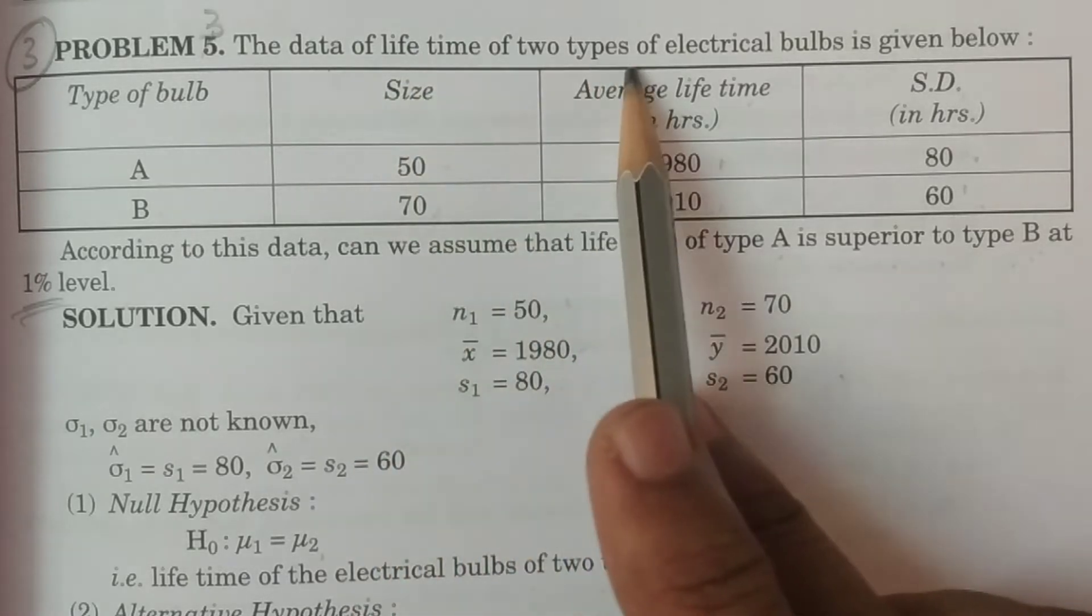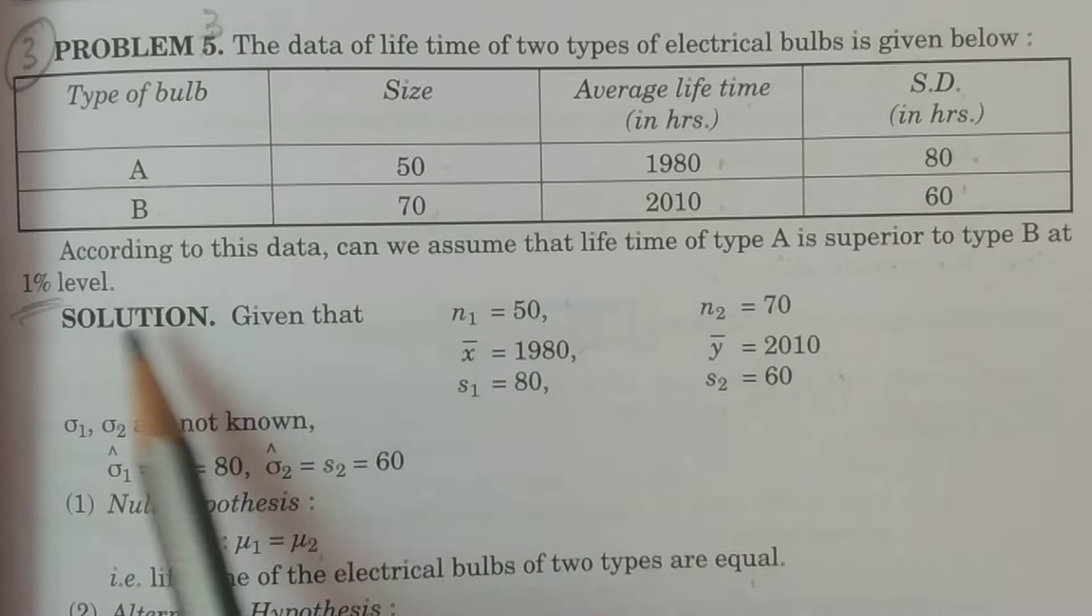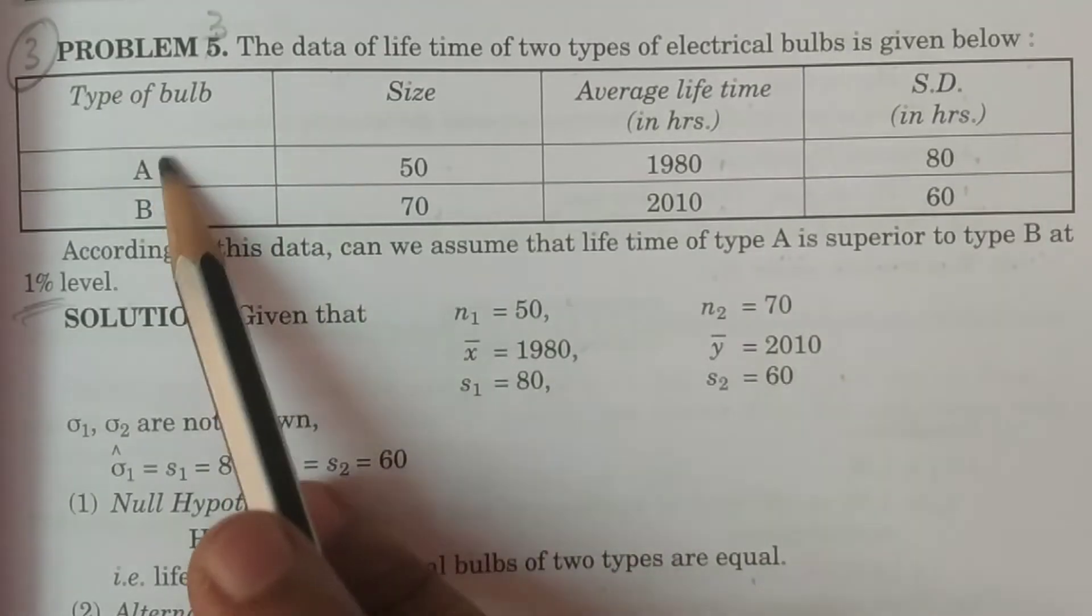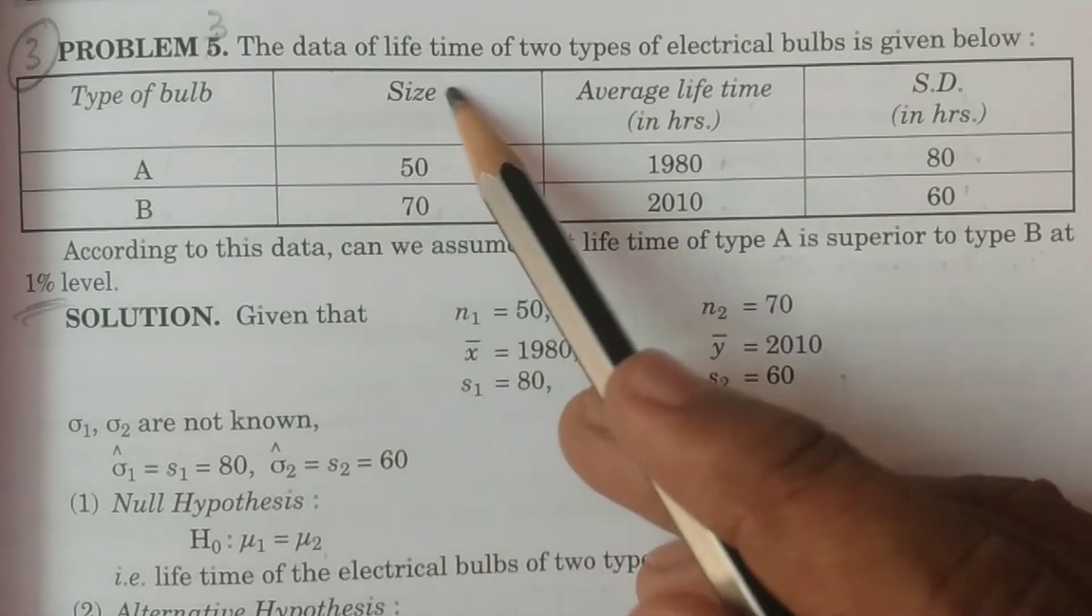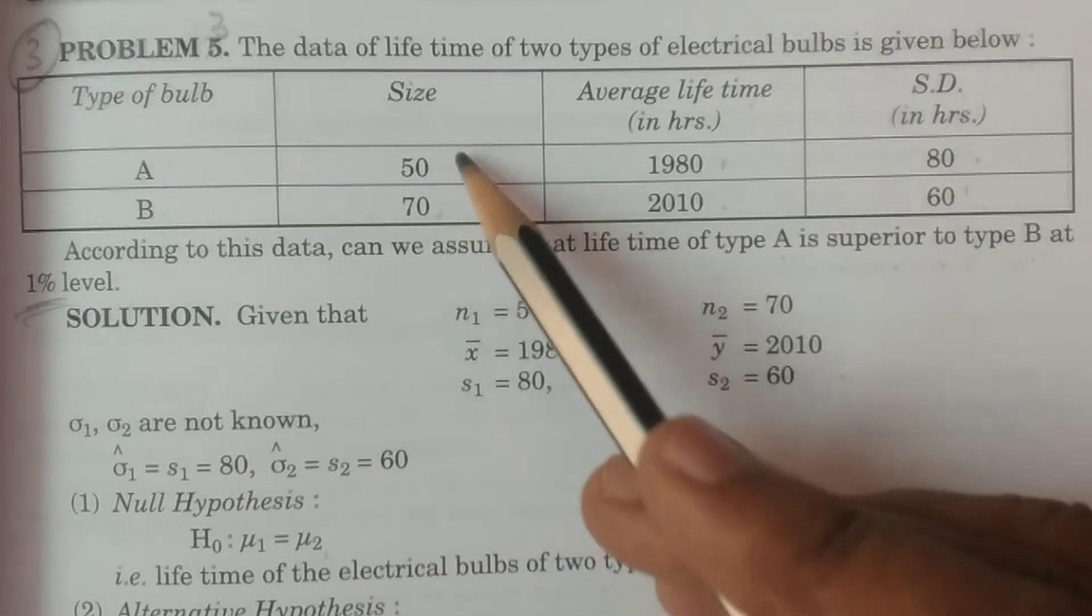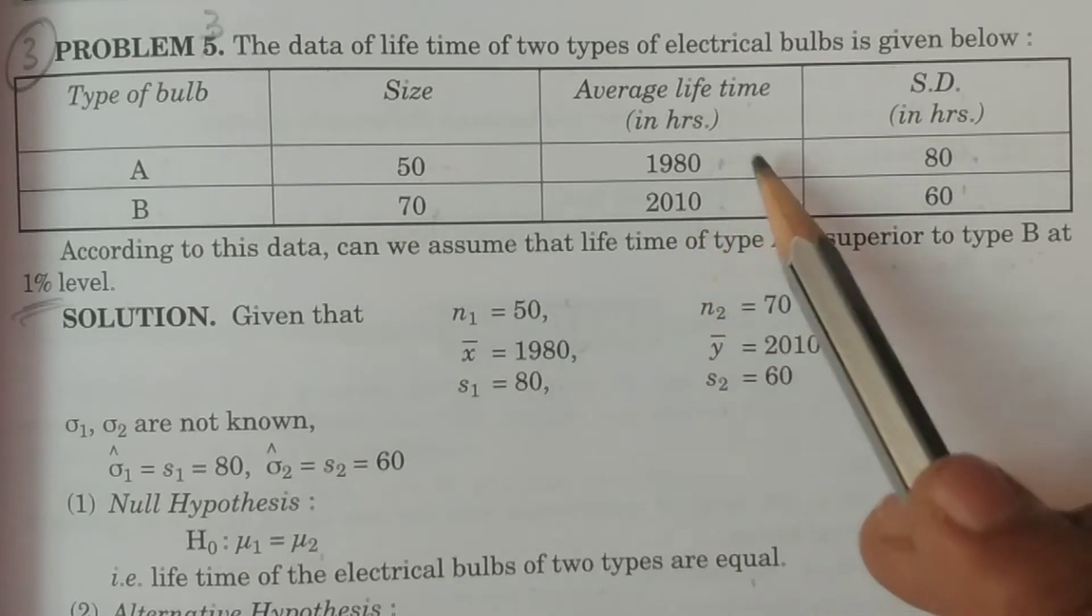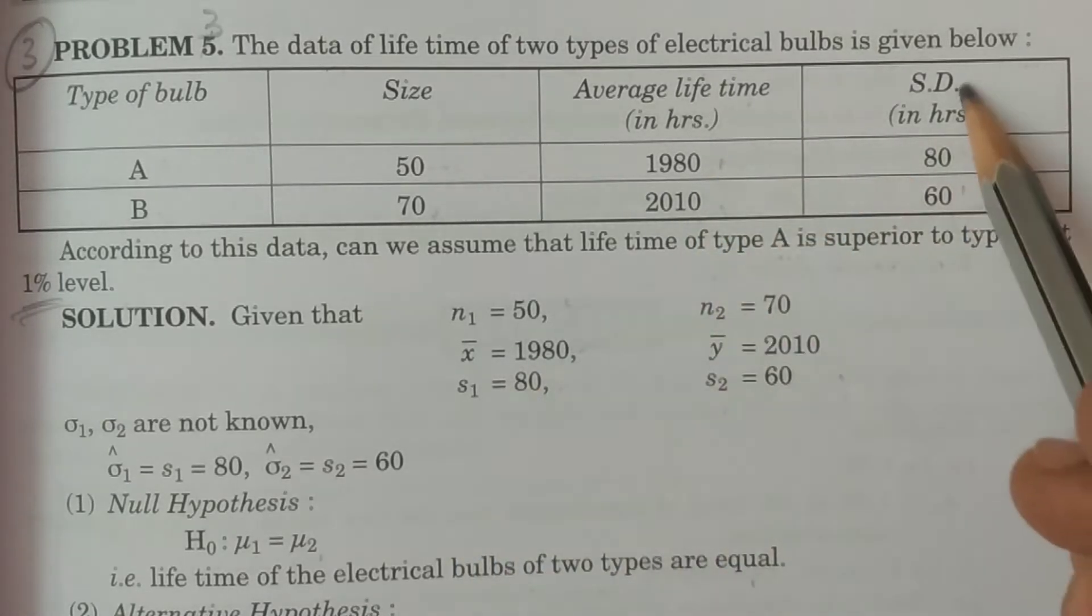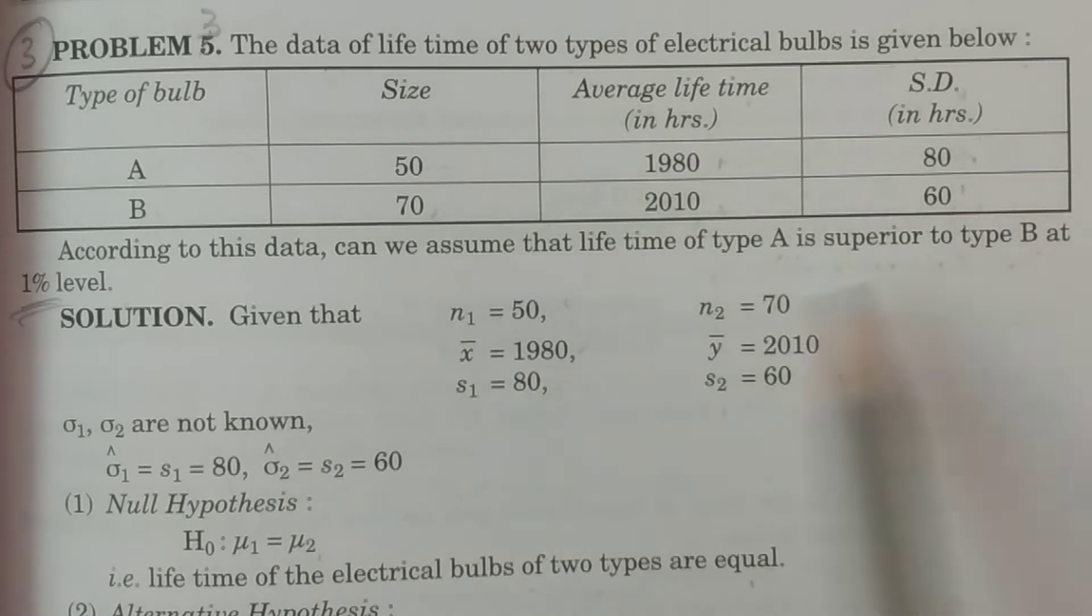The data of lifetime of two types of electrical bulbs is given below. Type of bulb A and B. Size 50, 70. Size is n1 and n2. Average lifetime in hours 1980, 2010. X bar, Y bar. Standard deviation in hours 80, 60. S1, S2. This is the sample data. Two samples collected.